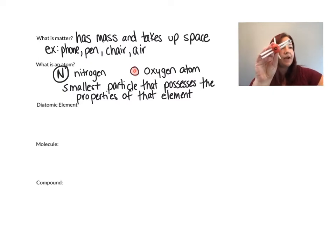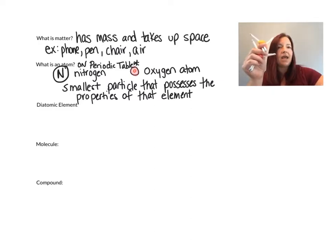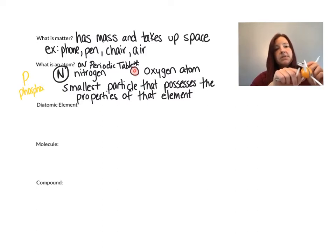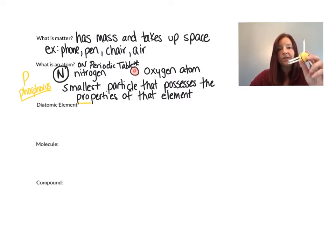Atoms are found on the periodic table. This is an atom of oxygen, this is an atom of phosphorus, and this is an atom of sulfur. Notice that I didn't say atoms are the smallest particle — atoms are not the smallest. They are made up of even smaller particles, but they are the smallest material that maintains the properties of that element.